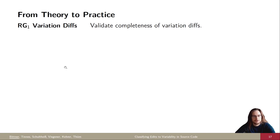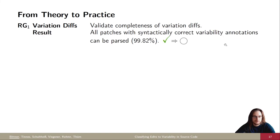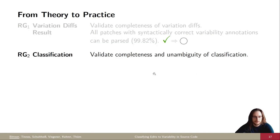So for our research goals, first, we wanted to validate the completeness of variation diffs. Of course, we have already proven their completeness, but only based on the assumption that variation trees are complete. We find that we can parse all syntactically correct patches with syntactically correct variability annotations, which is the majority. And all of the remaining patches that could not be parsed had indeed syntactically ill-formed variability annotations, for example, an else branch without an if or an if without an endif. So we conclude that variation diffs are complete.